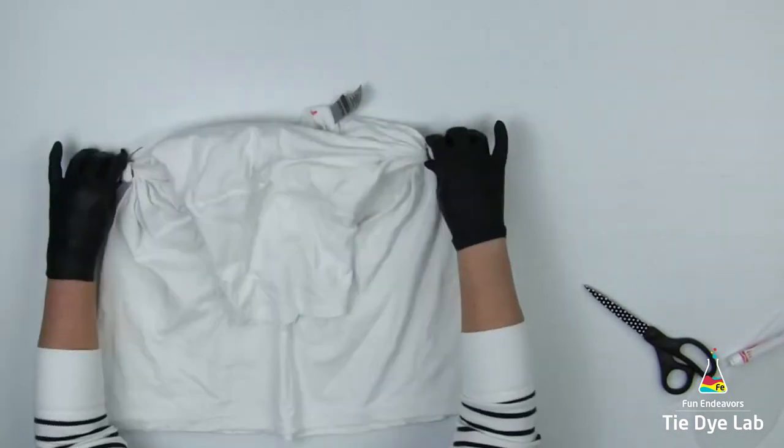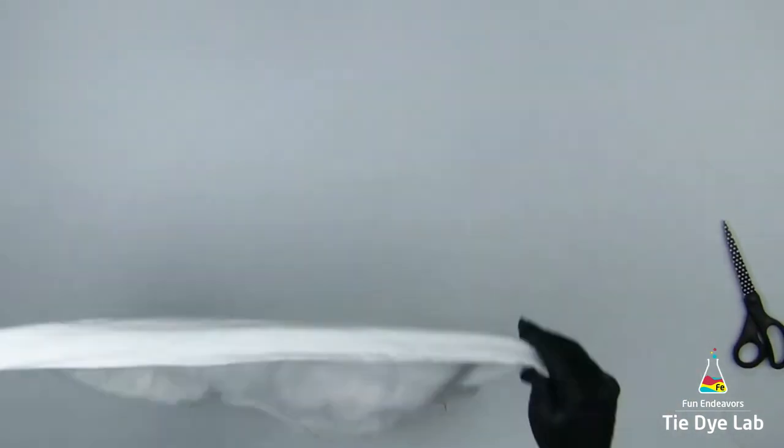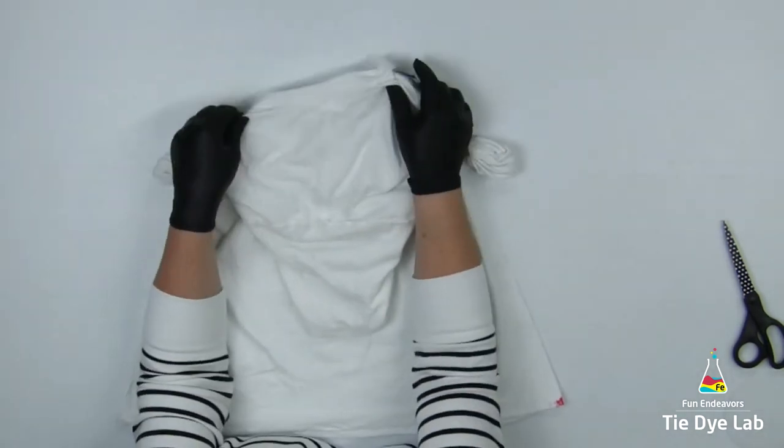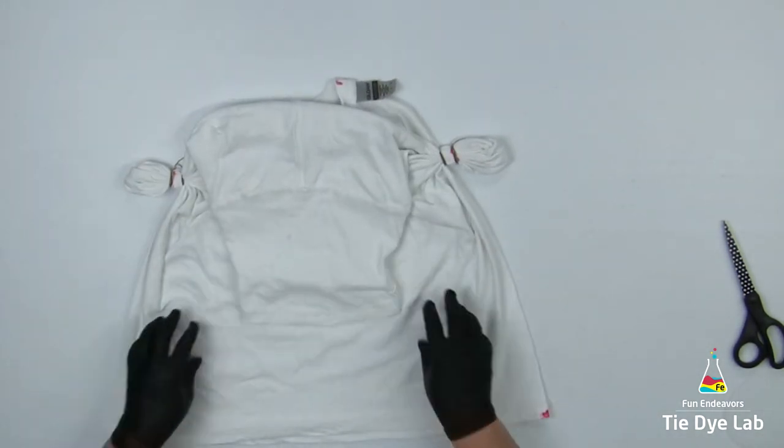Since the rest of the shirt is an unusual shape, I'm going to lay it out as flat as I can, and using my hands, I'm going to make a few scrunch folds in the shirt and hold those folds in place with some kite string.